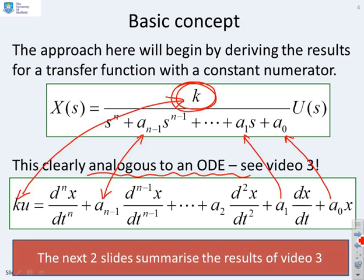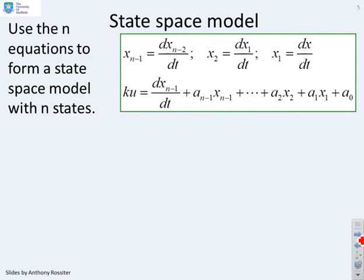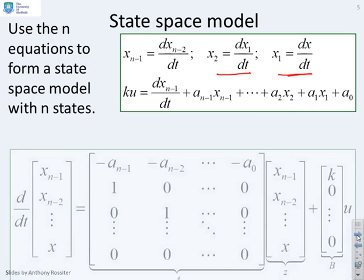Now what we'll do next is we'll summarize the results from video 3. But if you want it more slowly, then obviously go back and look at video 3. So if we had a state space model, here you can see I've done an nth order state space model. And we introduce new states. x1 is dx dt, x2 is dx1 dt, xn minus 1 is dxn minus 2 dt, and so on.